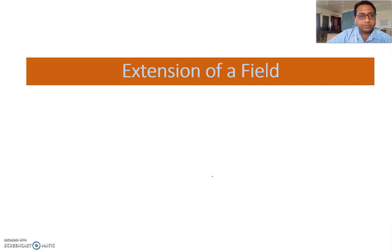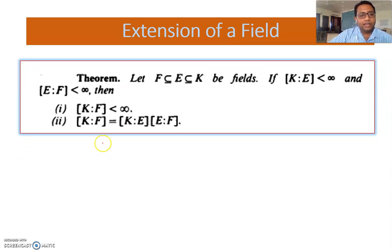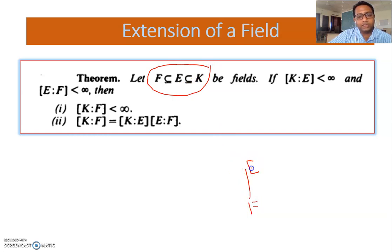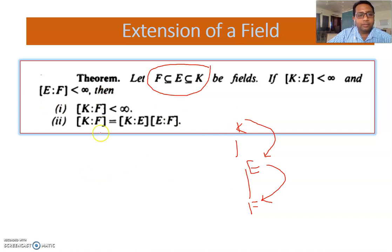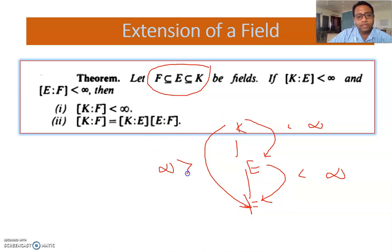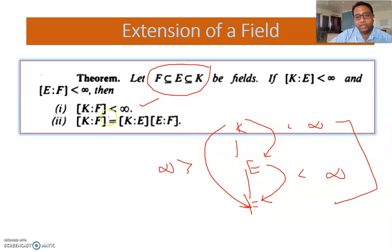Next result: अगर F ⊆ E ⊆ K है, और [K:E] finite है और [E:F] finite है, तो prove करना है कि [K:F] भी finite होगी, और साथ ही [K:F] = [K:E] × [E:F] — यानि इन दोनों dimensions की multiplication होगी। यह हमें verify करना है।